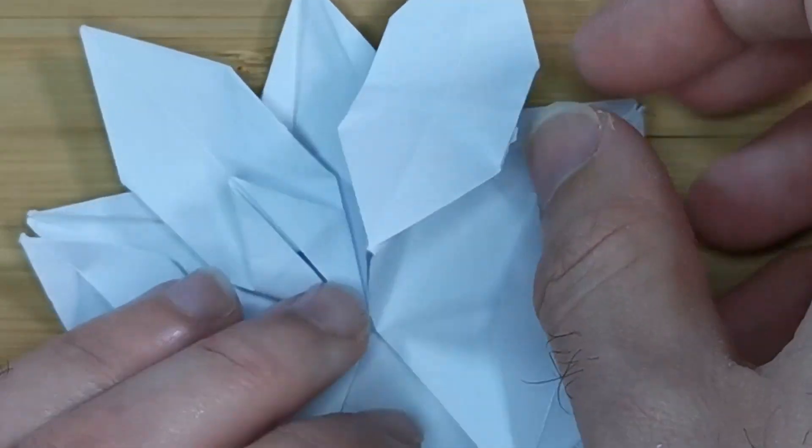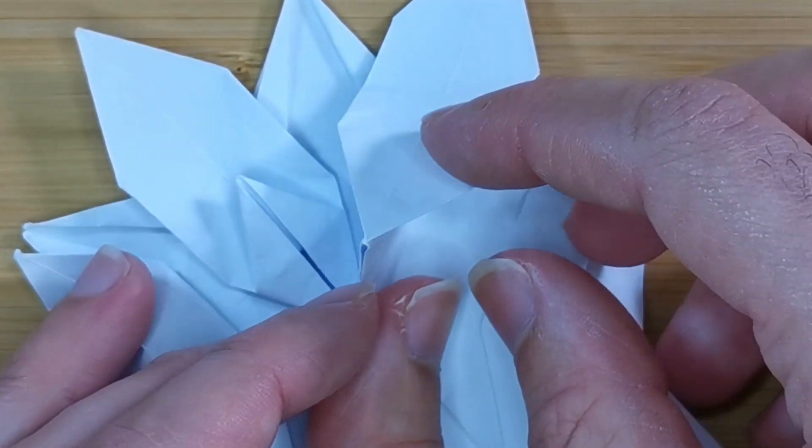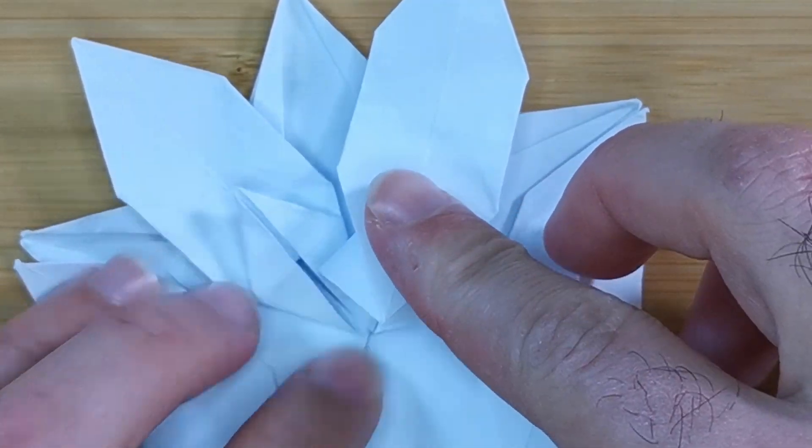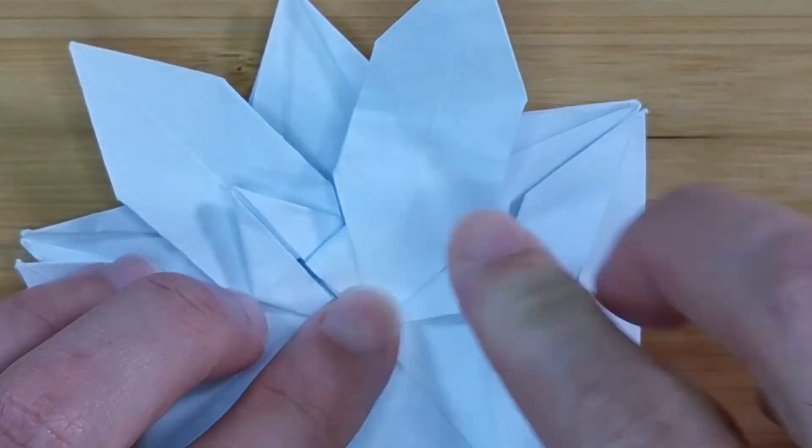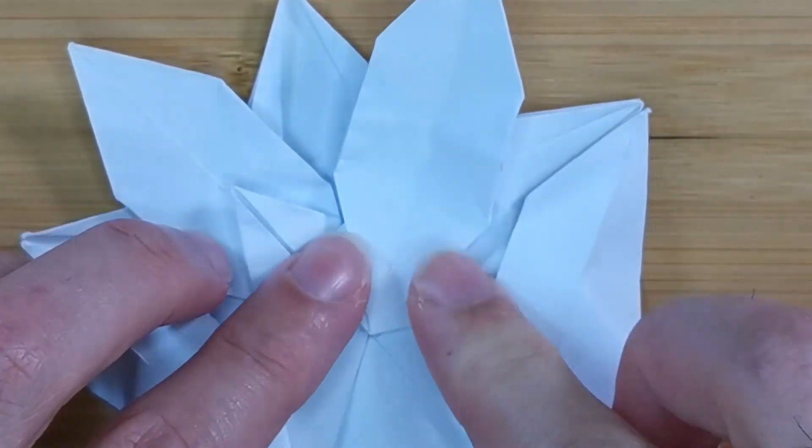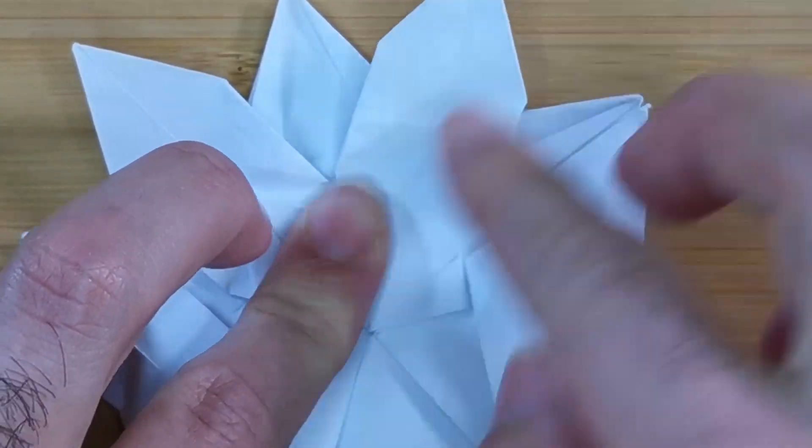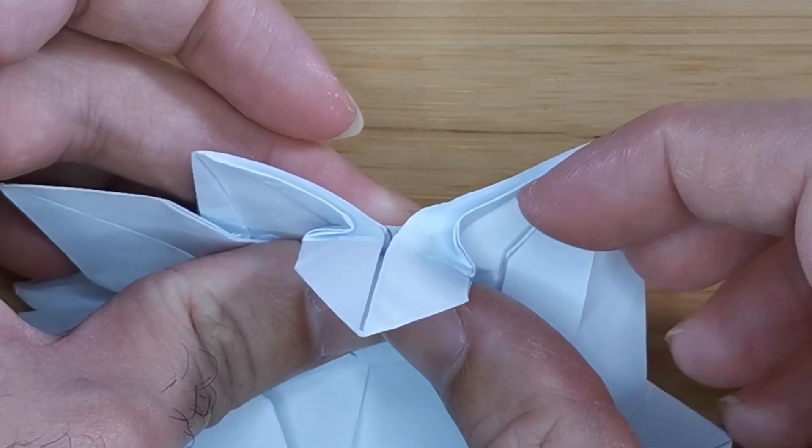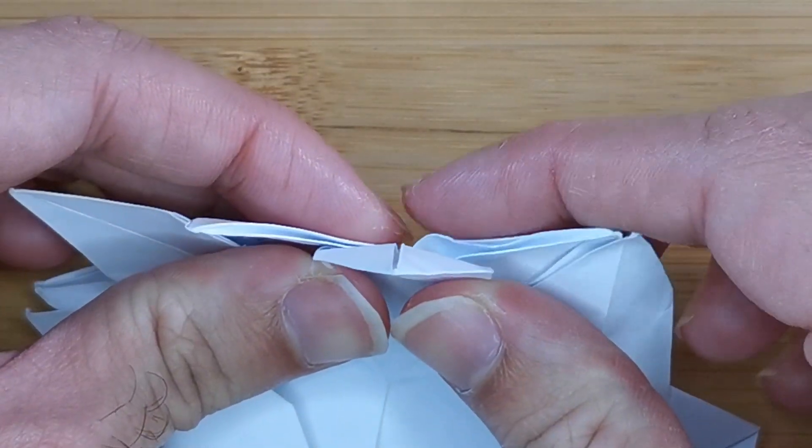Now we want to flatten this branch by making a squash fold here. So insert your finger into the pocket and squash fold by pressing down on the center crease, creating two new creases. And then flatten your branch by making two more creases here.